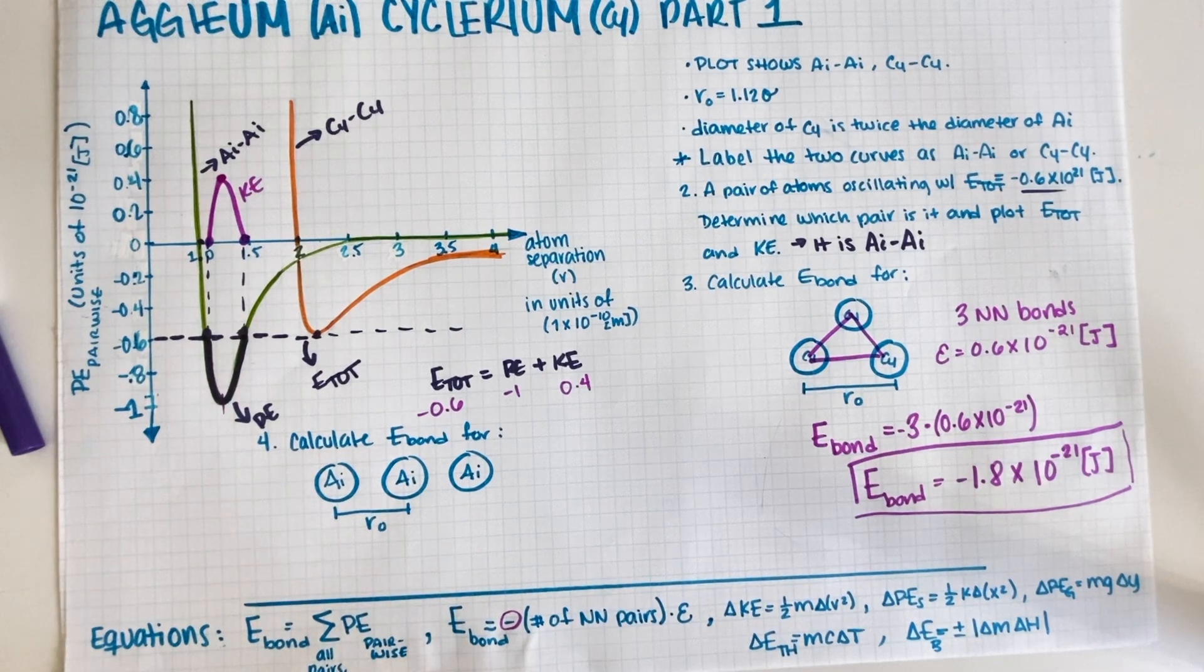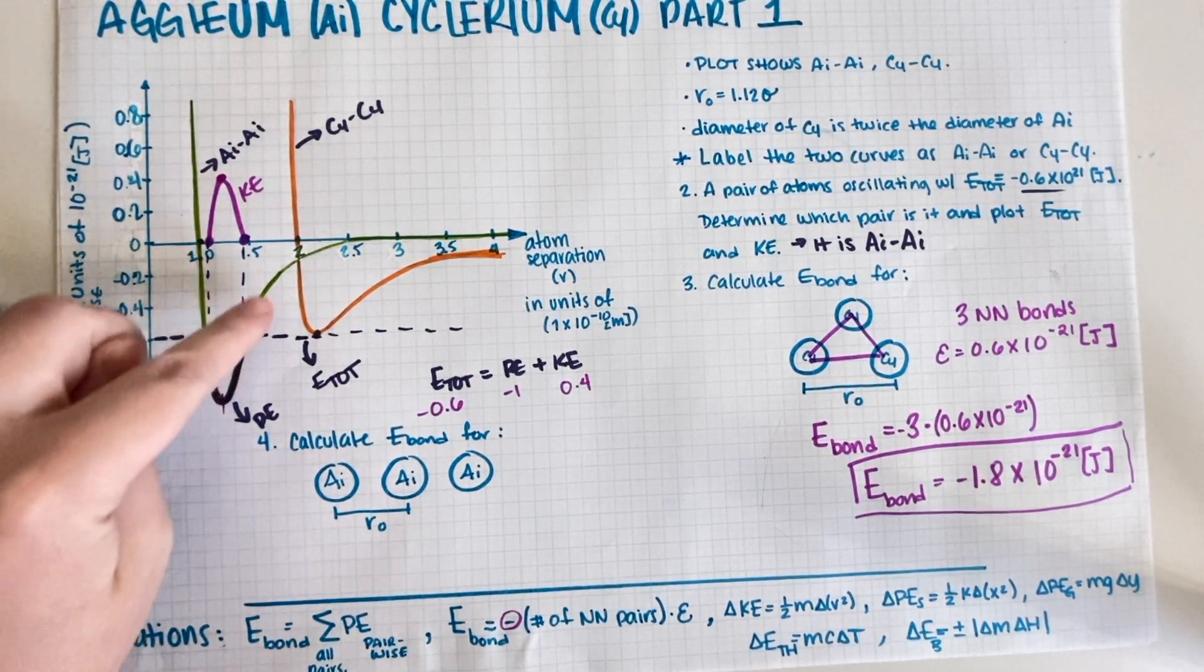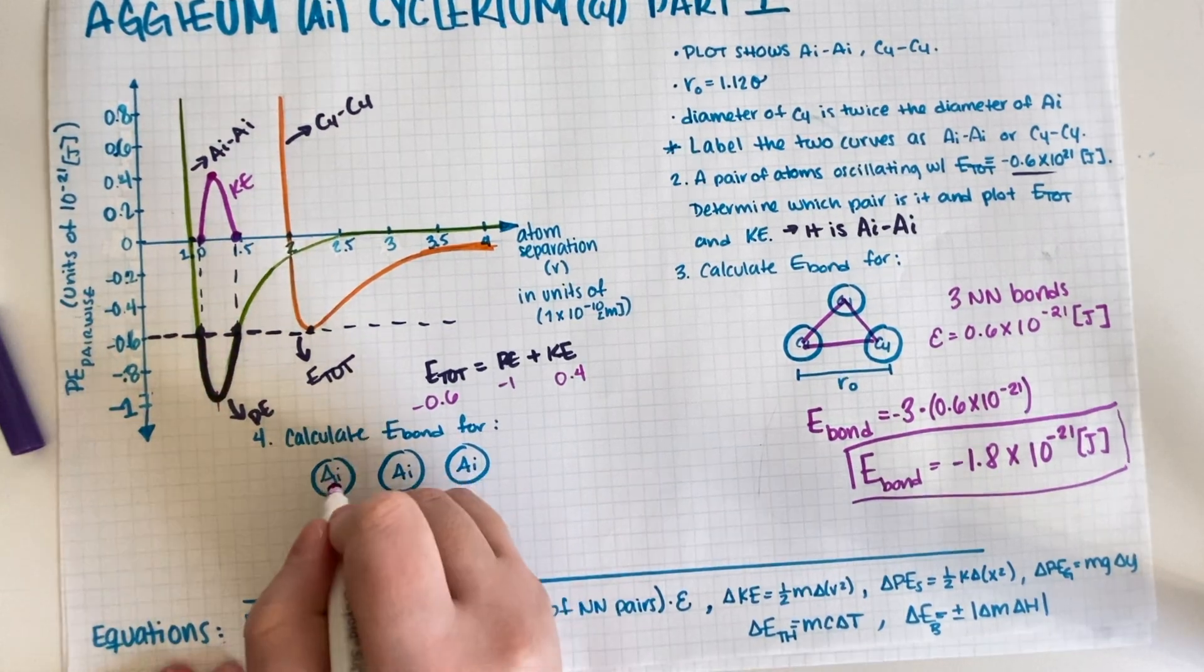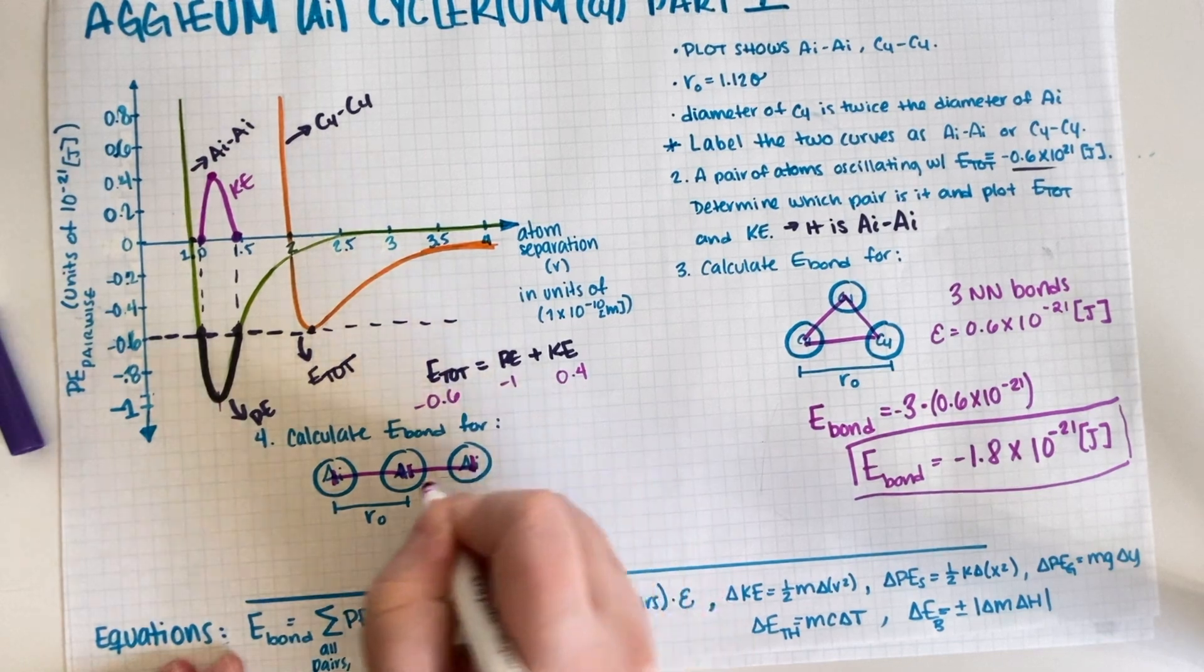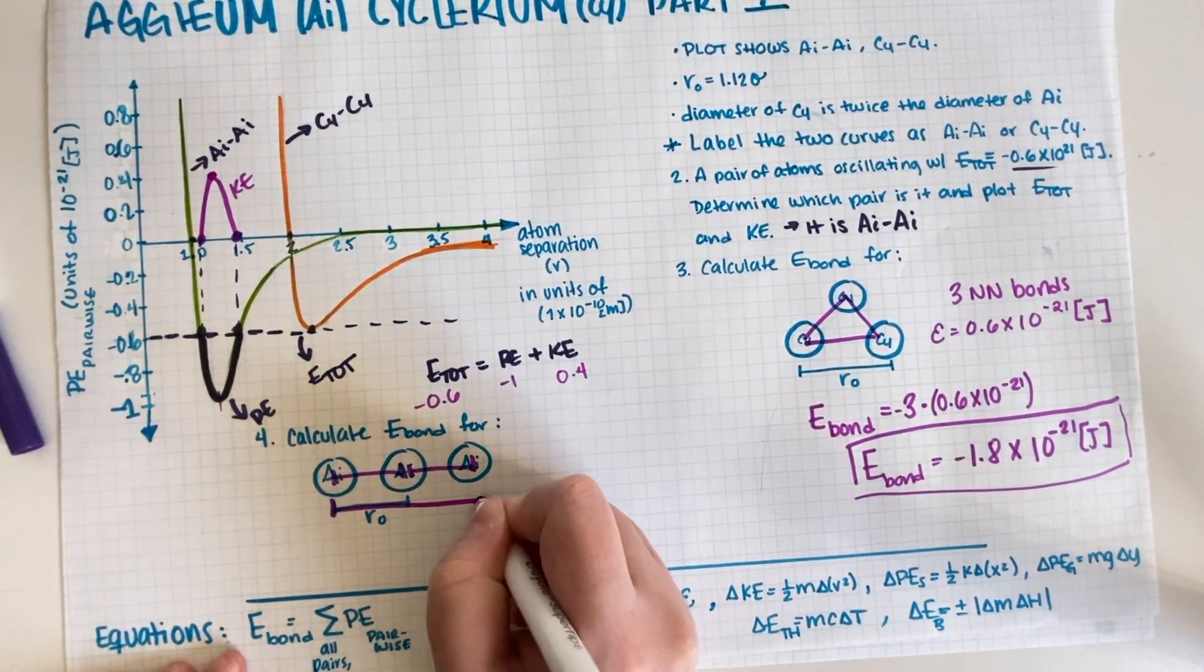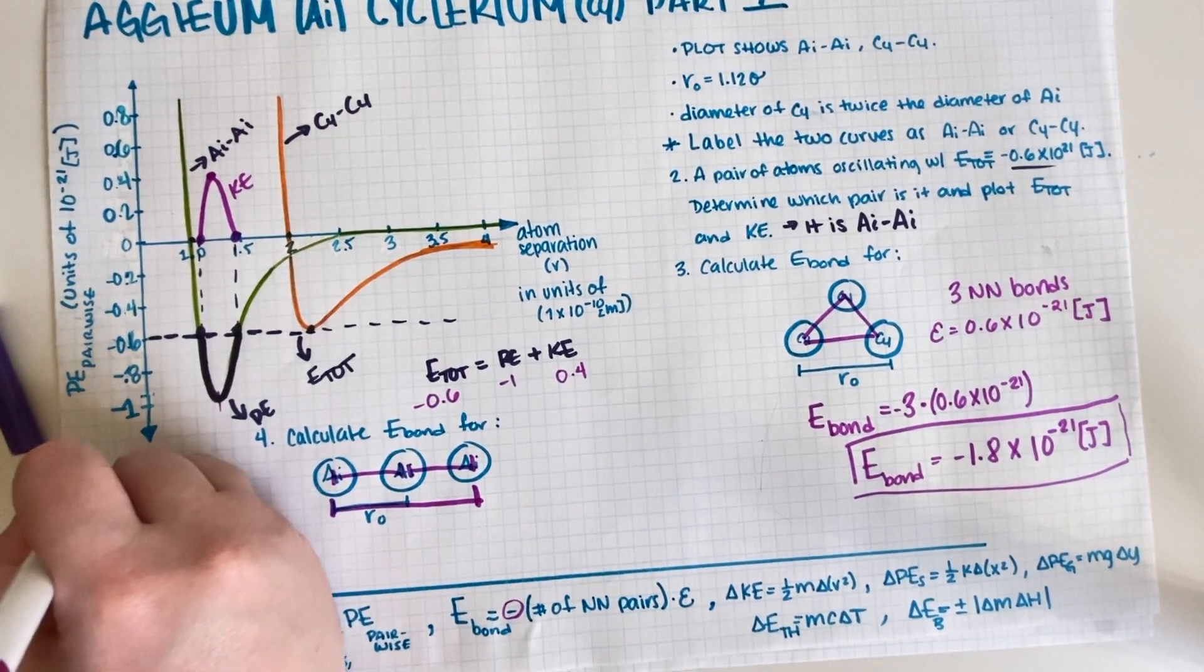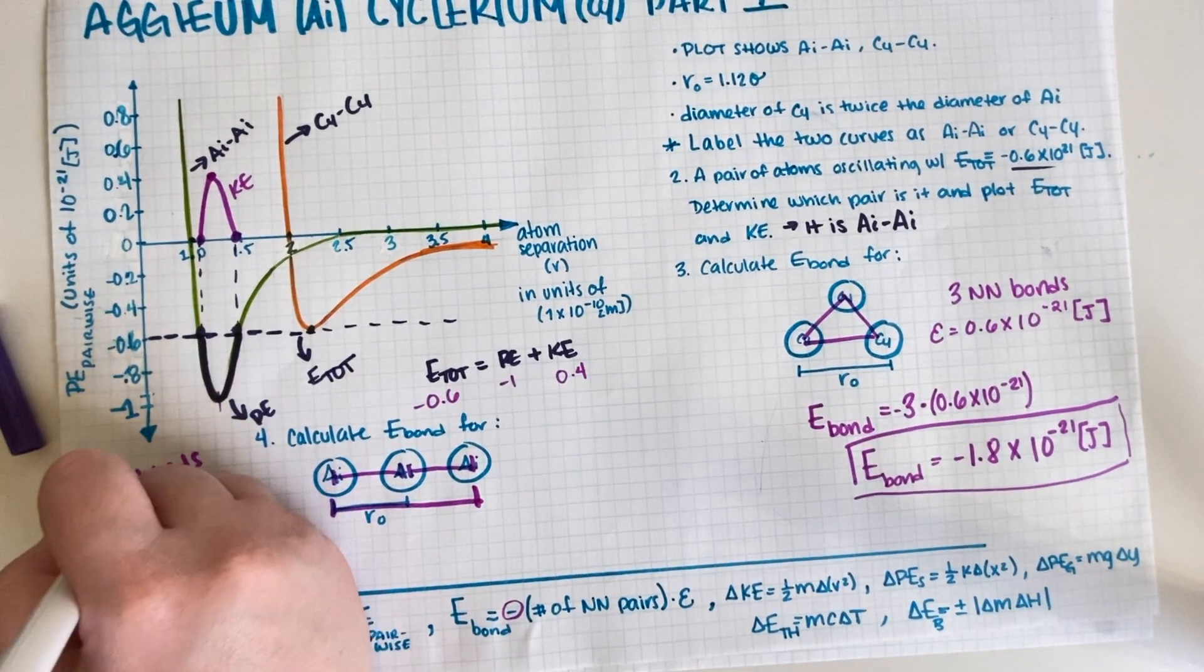All right, so now for number four we have to calculate E_bond for this Aegeum configuration. So now we're doing Aegeum, we're working with this graph. And also something interesting is that we do have two nearest neighbors but we also have one second nearest neighbor. So we have two nearest neighbor bonds and one second nearest neighbor bond.